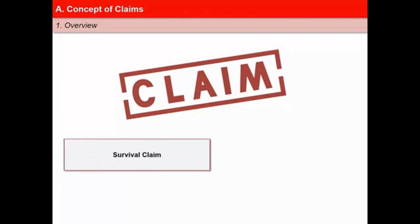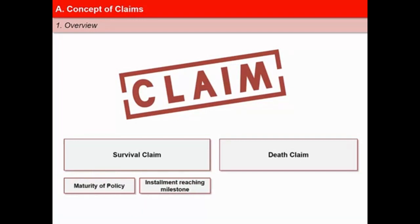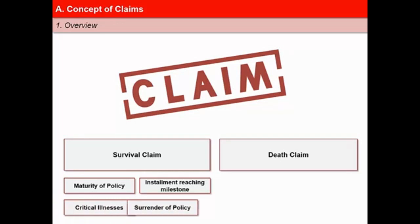Claims can be of two types: survival claims, which are payable even when the life insured is alive, and death claims. Examples of events triggering survival claims are maturity of the policy, an installment payable upon reaching a milestone under a money-back policy, critical illnesses covered under the policy as a rider benefit, and surrender of the policy either by the policyholder or the assignee.